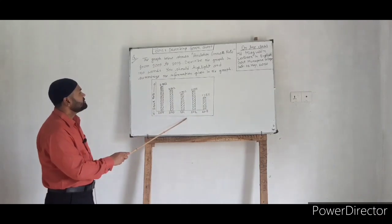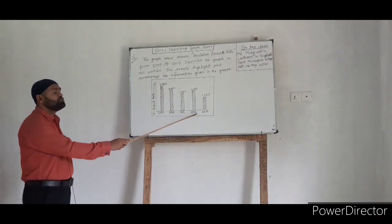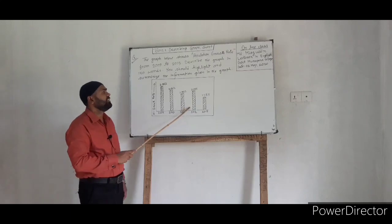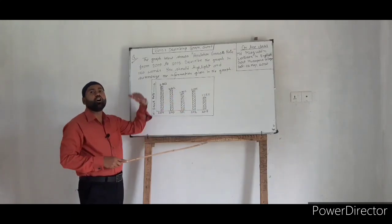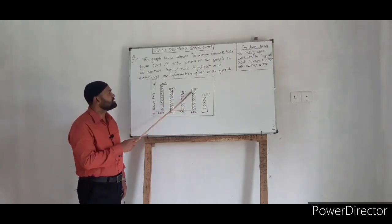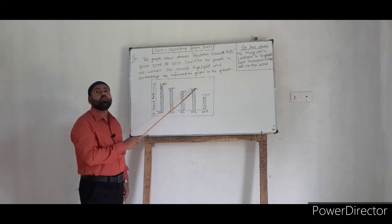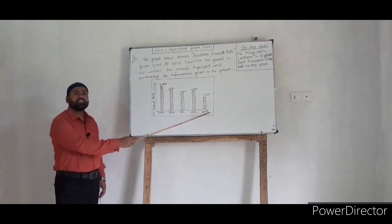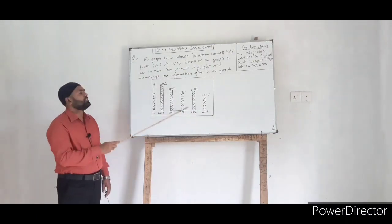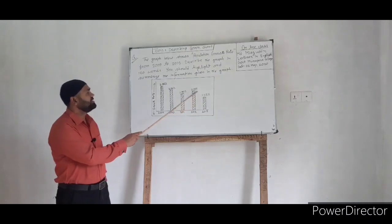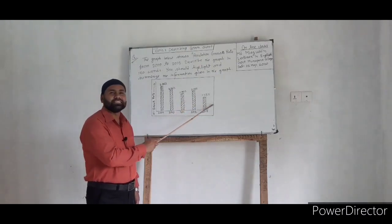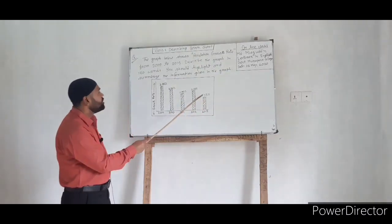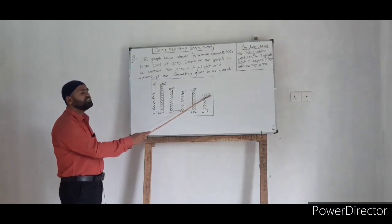But in 2012, the population growth rate increased or went up, and it was 2.10 percent. It is seen that in 2013, the population growth rate decreased again, and it was 1.33 percent.